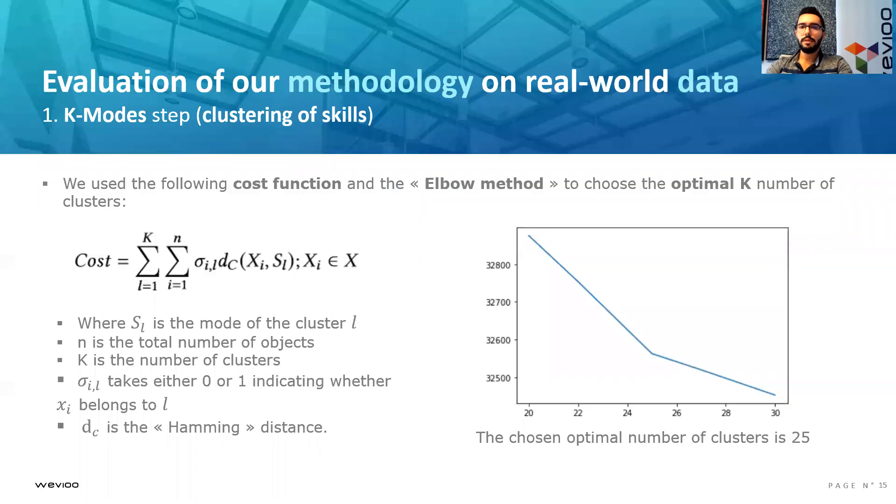During the K-modes step, we aimed to generate clusters of skills and to make the skills attribute single-valued. For this, we use the following cost function, and an elbow method that will help us choose the optimal K number of clusters, which is an important parameter in every partitioning clustering method. The cost function sums the dissimilarities between points of each cluster. Based on the results from the elbow method, the chosen optimal number of clusters to use is 25.